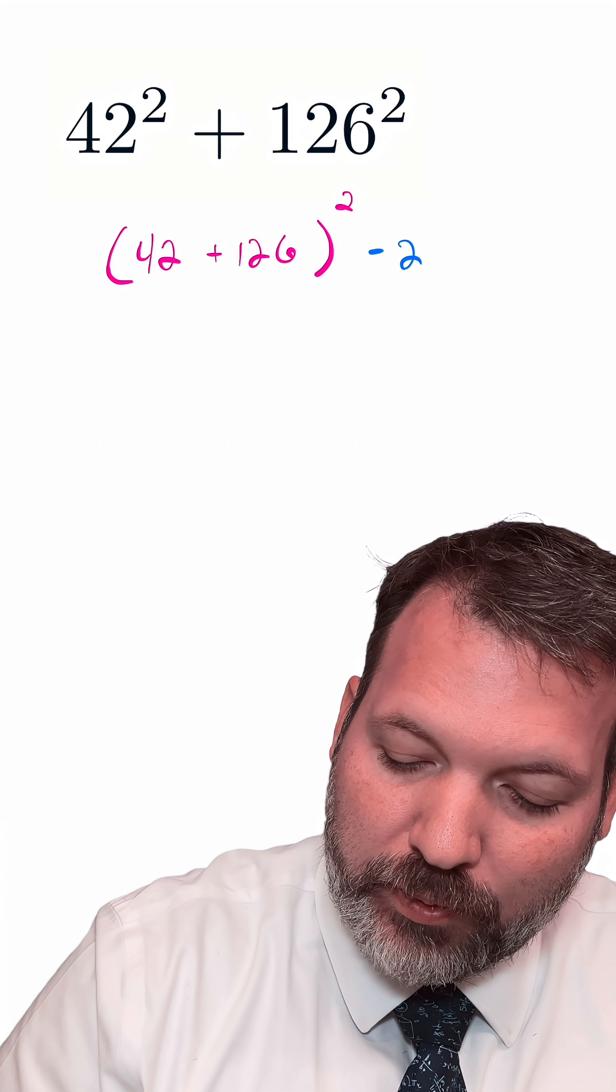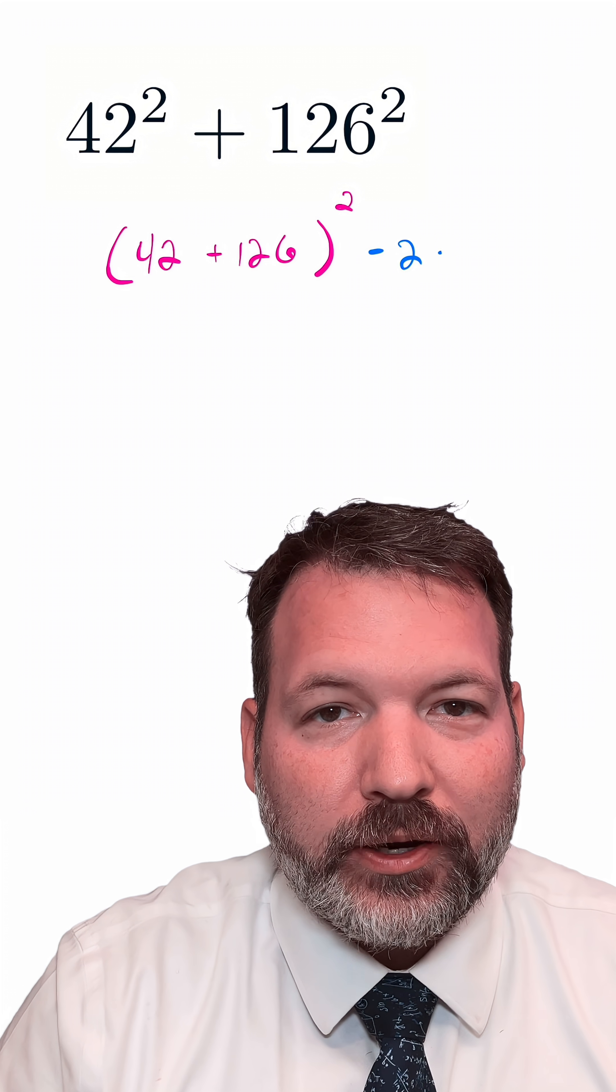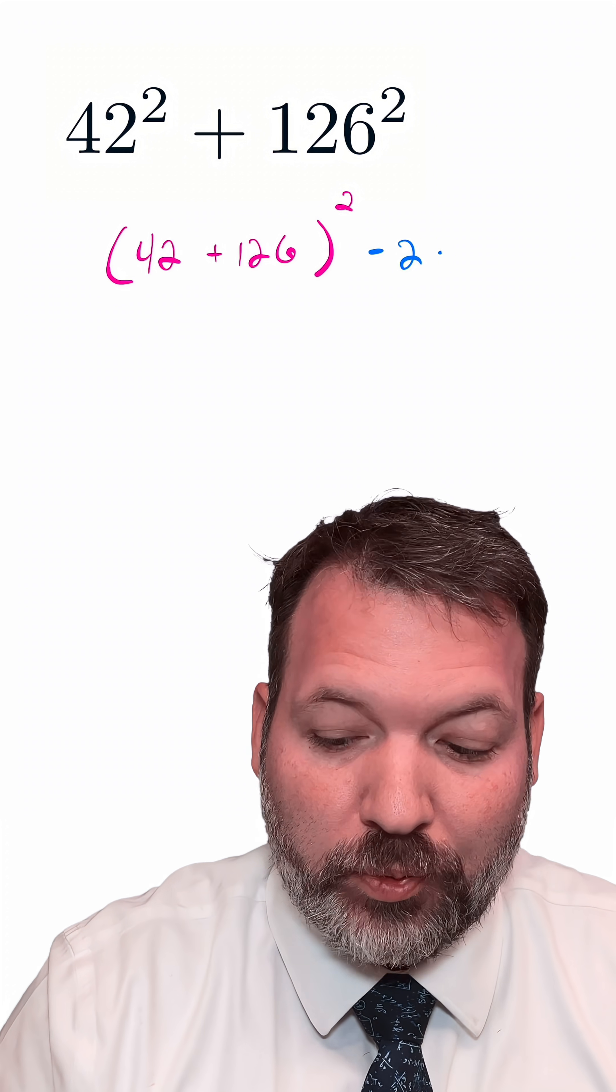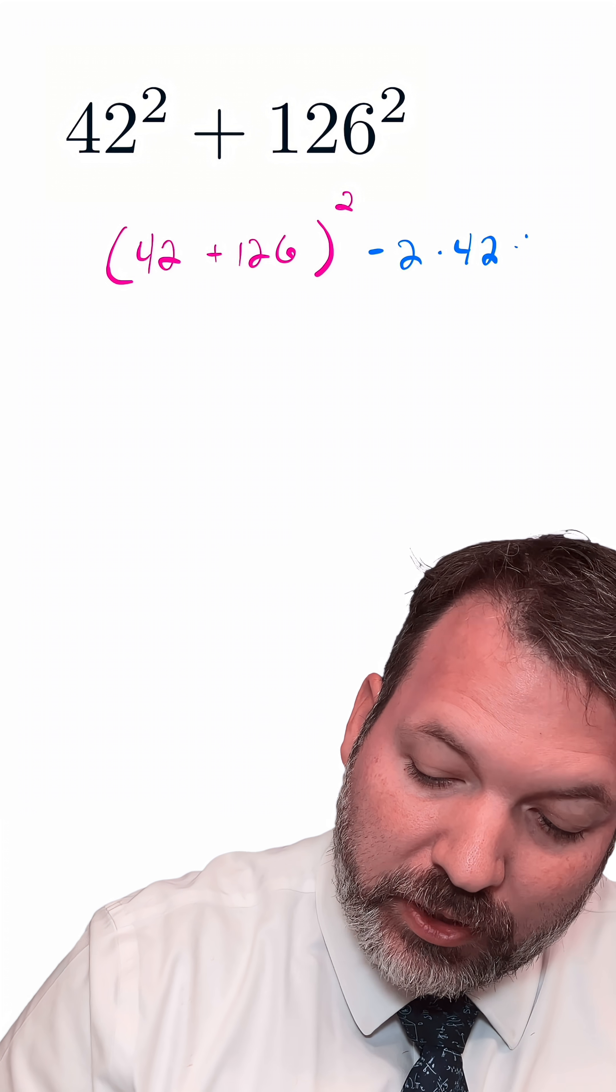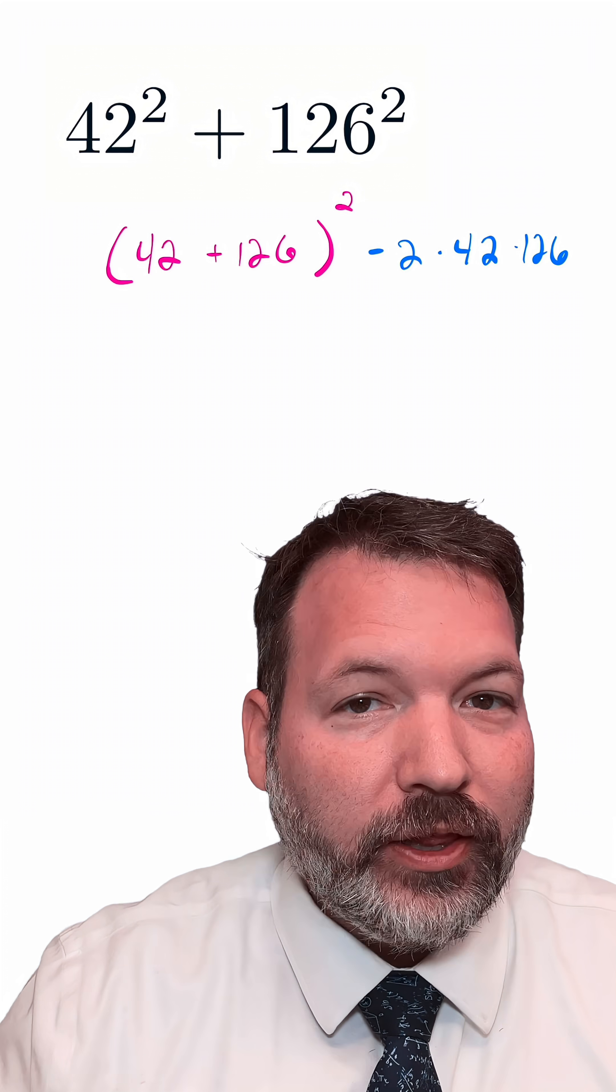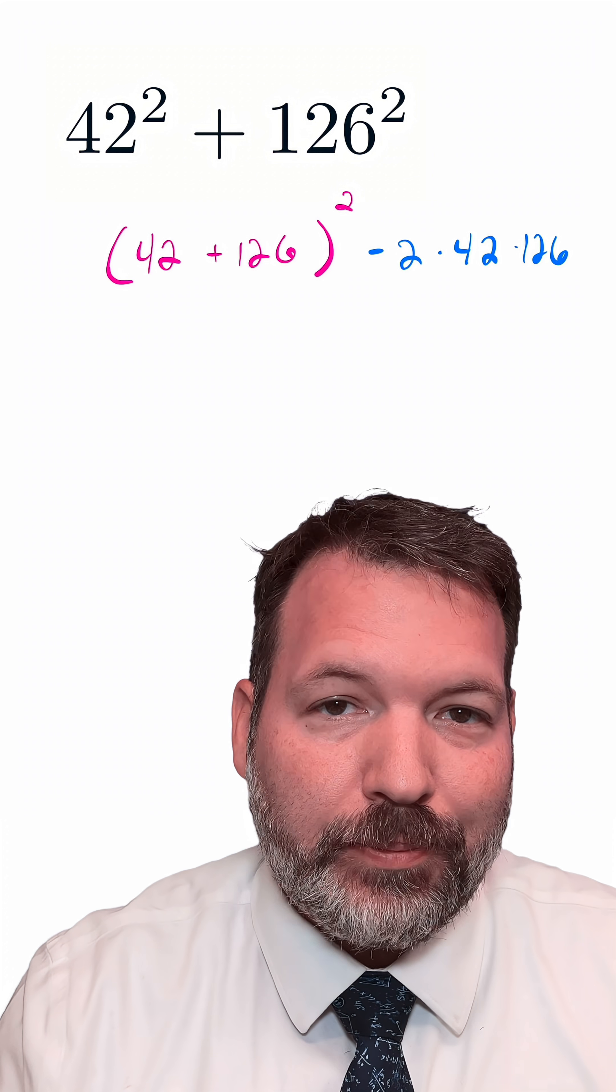Not only would we have to add 42 and 126 and then square that really large number, we would then have to double the product of 42 and 126 and subtract that away all in our head. So this clearly is not the best approach.